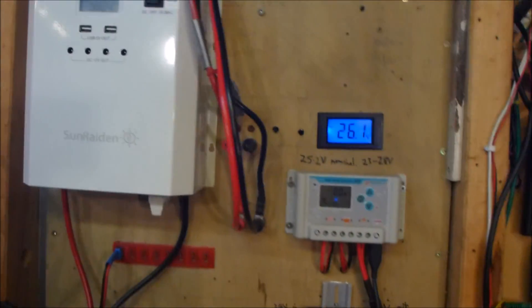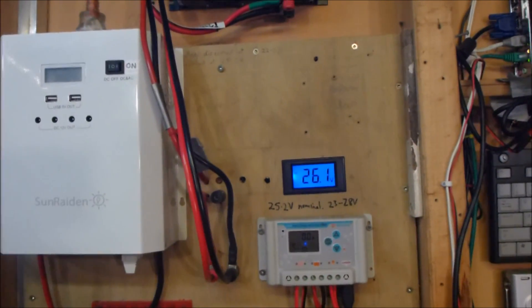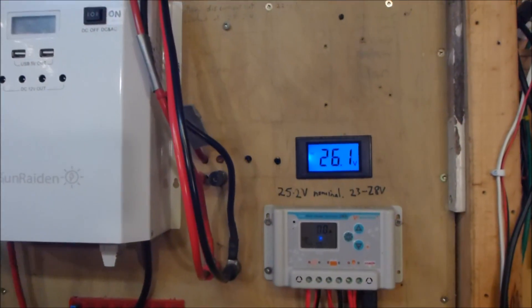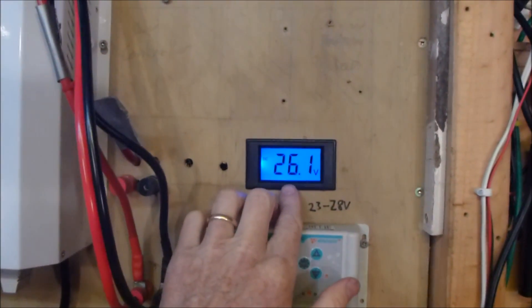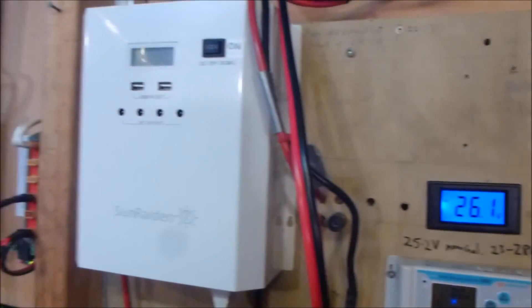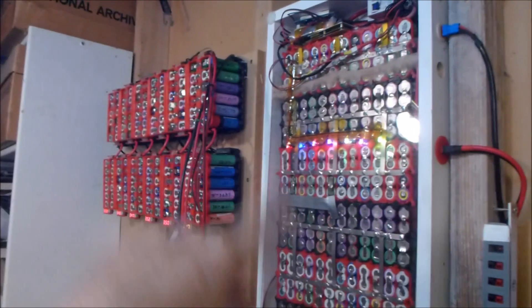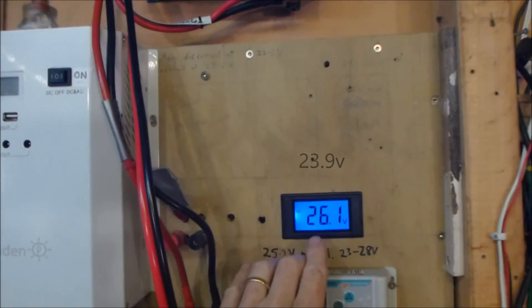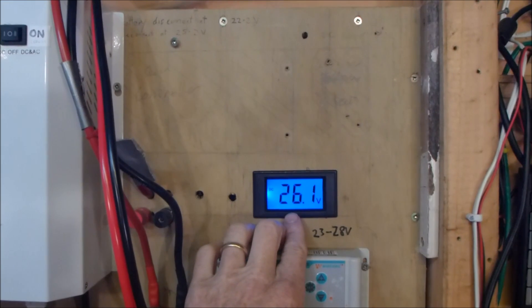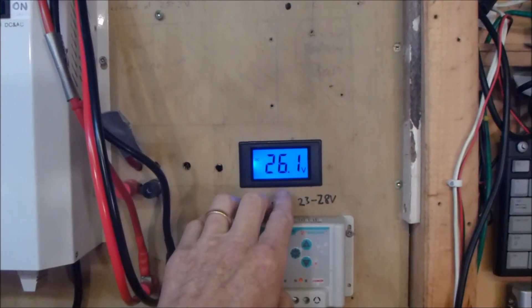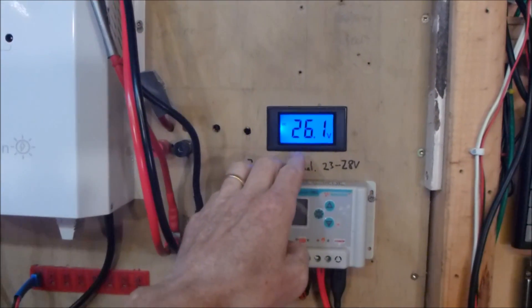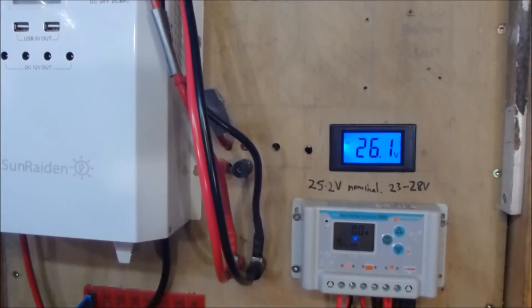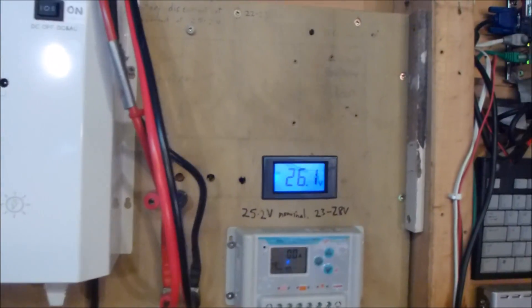So I have just come back from 3 days away and when I got back this voltmeter which measures the voltage on all the packs was reading just under 24 volts. Now normally my system is running around 27 volts so 24 is actually really low for me.